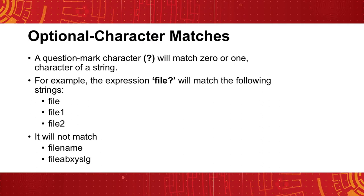An optional character match will match at most one character in a string — that is, it will match both zero or one character. This is denoted by a question mark character. For example, the string 'file?' will match: file, file1, file2. It will not match, however, filename or file_axysIg.